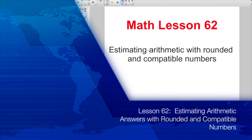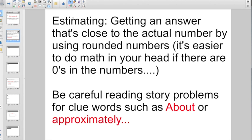Today we're talking about estimating arithmetic with rounded and compatible numbers. I think everybody in the room knows what rounded numbers are, but maybe not everybody knows compatible numbers. When we're talking about rounding, you're just talking about estimating, getting an answer that's close to the actual number by using rounded numbers. Because it's easier to do math in your head if there's zeros in the numbers. Be careful when you're reading story problems for clue words such as about or approximately. Those are your heads up that they want you to do some estimating or rounding.